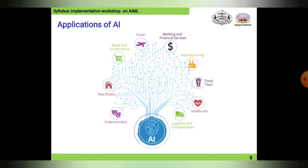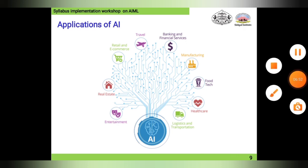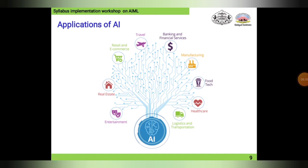Now, the applications of AI: artificial intelligence is widely used everywhere. Some key areas include entertainment, real estate, retail and e-commerce, travel, banking and financial services, manufacturing, food tech, healthcare, logistics, and transportation. As time progresses and new technologies emerge, many new AI applications will be introduced. This represents the new beginning of a new era of AI.